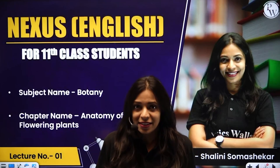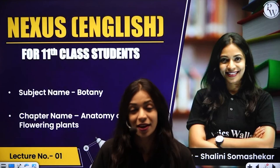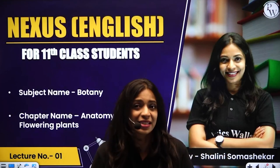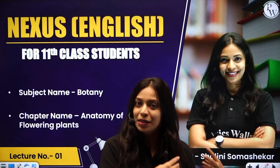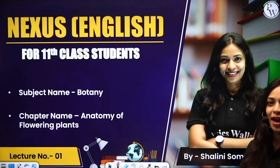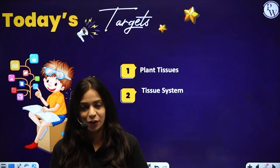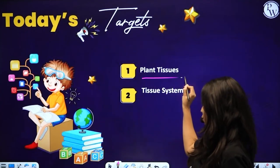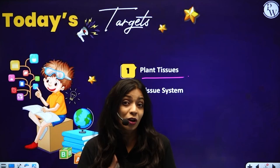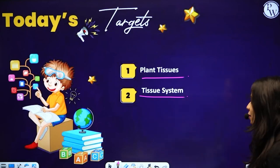We can broadly divide this chapter into two parts. In the first part, we will focus on all the different types of tissues that we can find in plants — we will learn about their structure and function. In the second part, we are going to learn where exactly and how exactly those tissues are arranged in plant organs like roots, stem and leaves.